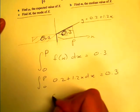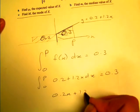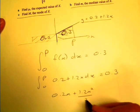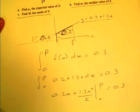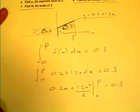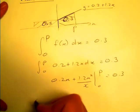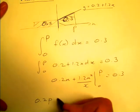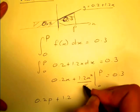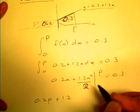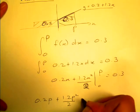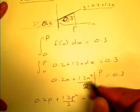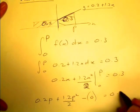So I want to solve that, and I want to evaluate this to find p. Okay, and now what I get is 0.2p plus 1.2, that should be 2 there, 1.2p squared over 2, take 0, because when I substitute 0 into there it just goes away, equals 0.3.